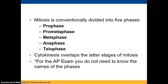Mitosis is divided into five phases: interphase, prophase, metaphase, anaphase, and telophase, but prometaphase is another well-recognized phase. Depending on your expertise, you may have additional phases that are simply more specific subdivisions. It's important to recognize that cytokinesis is going to overlap the latter stages of mitosis — telophase and cytokinesis may be happening at the same time.